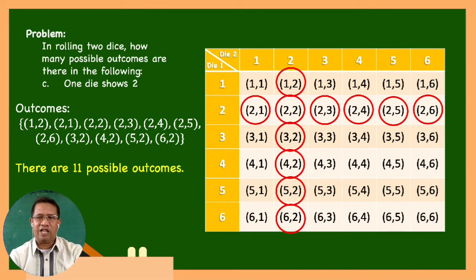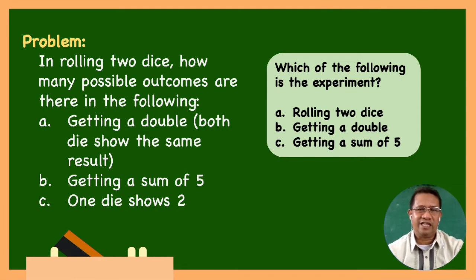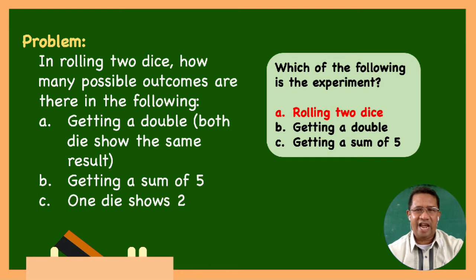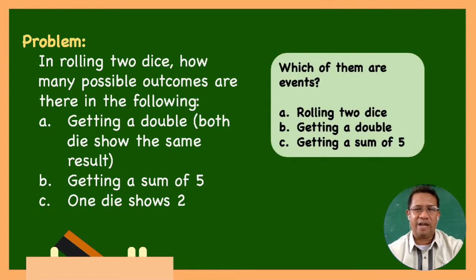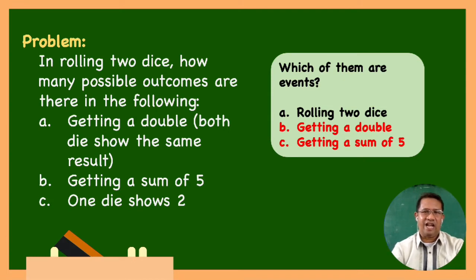Did you now understand how to identify the outcomes? Great! Now, in the problem, which of the following is the experiment? A: Rolling two dice. B: Getting a double. C: Getting a sum of 5. The correct answer is A, rolling two dice. Next, which of them are called events? The correct answers are B, getting a double, and C, getting a sum of 5.